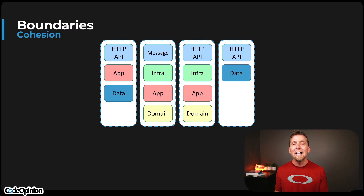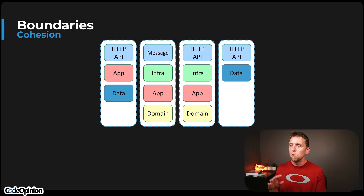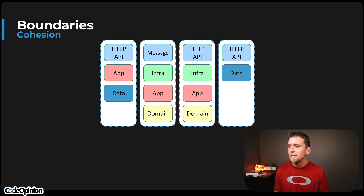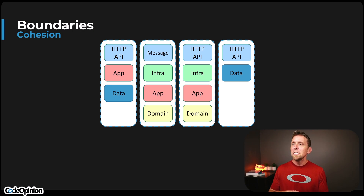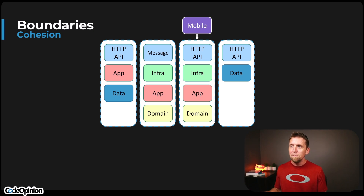One of the benefits of grouping by capability is that you can decide within each vertical slice — depending on what it is — this vertical slice might be exposing an HTTP API with some underlying data and no domain model. Another part may be purely message-driven and async with a rich domain model. Another may have an HTTP API. It's not a monolith or microservices — we're thinking about this logically. You may have a mobile app that's a part of one particular vertical slice, written in a completely different language and repository. That's still a part of the vertical slice.